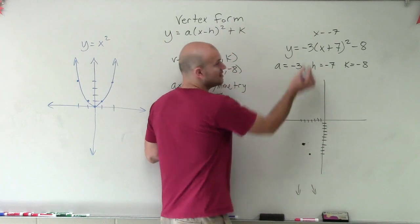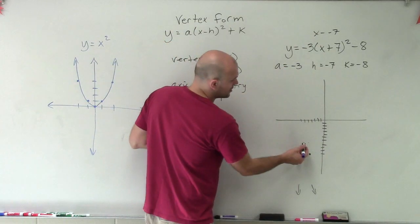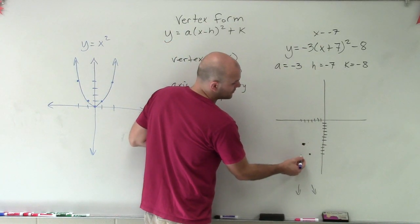And then when I go to the left, well, negative one squared is still one. And then I'm multiplying it by negative 3. So it's going to be negative one down three as well.